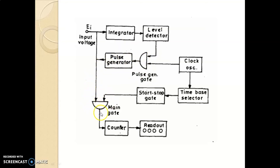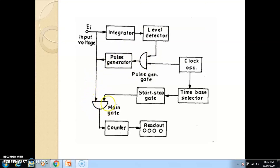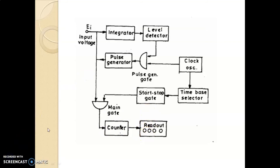The pulses go to this gate. This gate is open — the start and stop gate is open — so that the output generated from this gate is continuously measured and counted by using the counter. It will be displayed on the display as the voltage. In such a way, the counter counts the pulses in proportion to the input voltage.